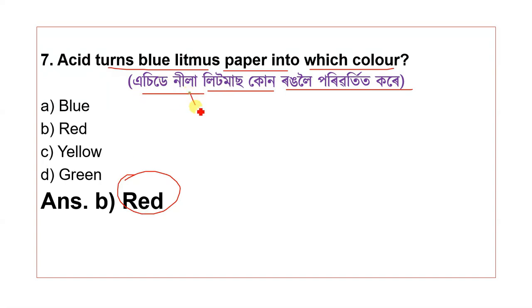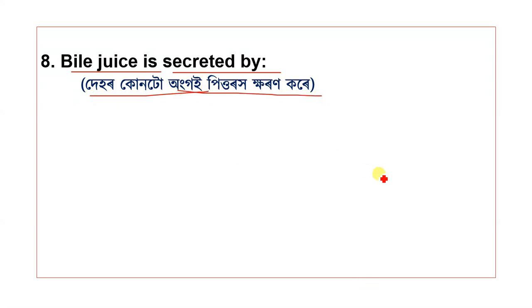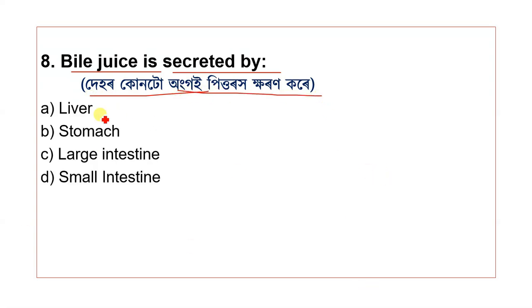Question 8: Bile juice is secreted by which organ? The options are liver, stomach, large intestine, and small intestine. The correct answer is liver.